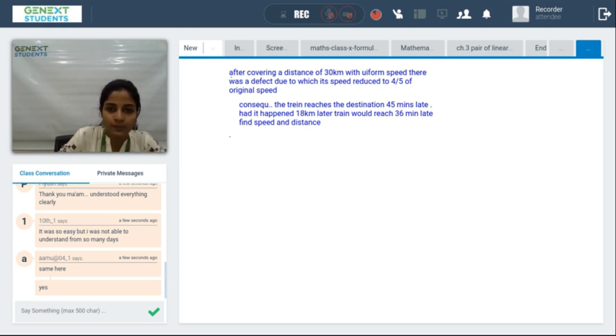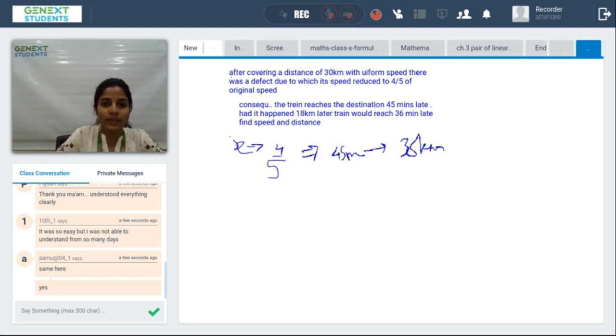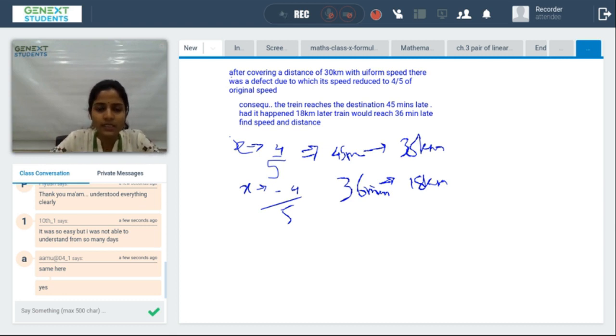After 18 kilometers, if the defect would have happened - this is an assumption - the train would have reached 35 to 36 minutes late. The speed would have reduced. So we can now frame the equation as 4/5 of x, and we can give the distance of 30 kilometers as y.